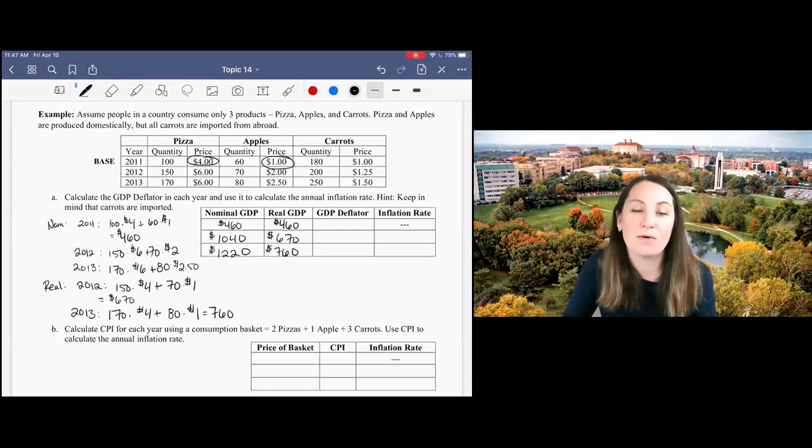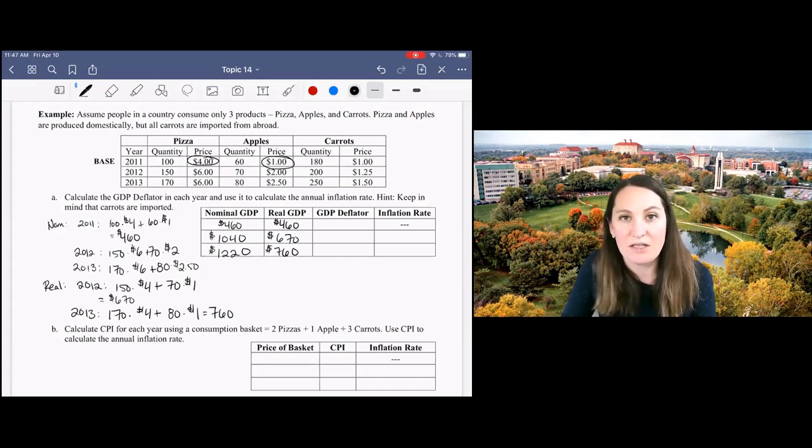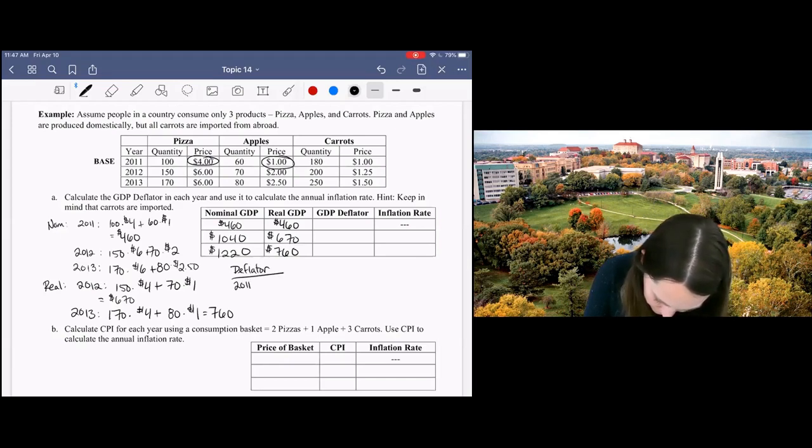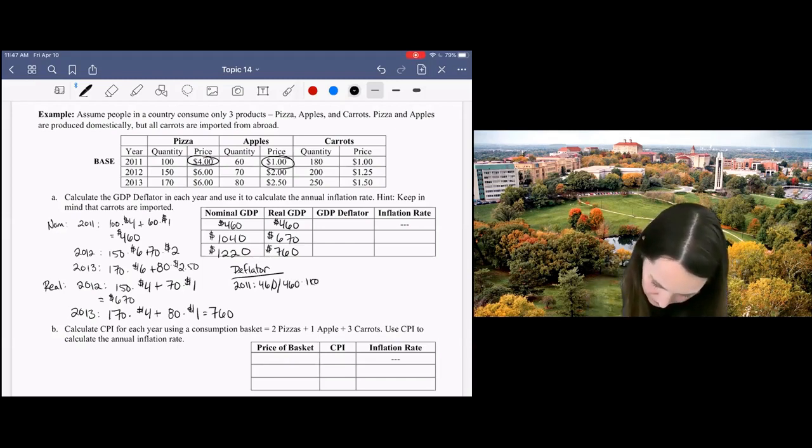Alright, so now we've calculated nominal and real GDP. We're ready to calculate the GDP deflator, which will be nominal divided by real times 100. In our base year that's always going to equal 100 by definition.